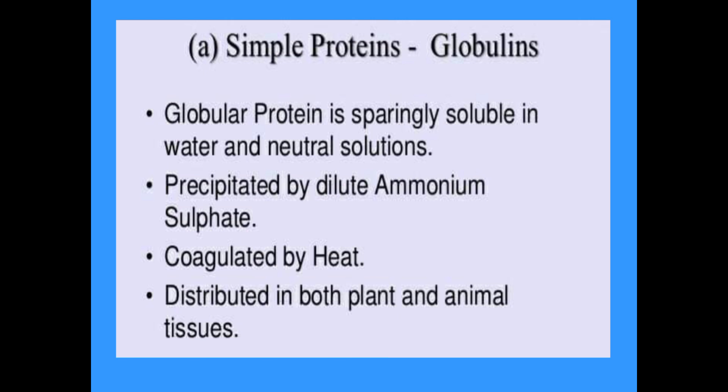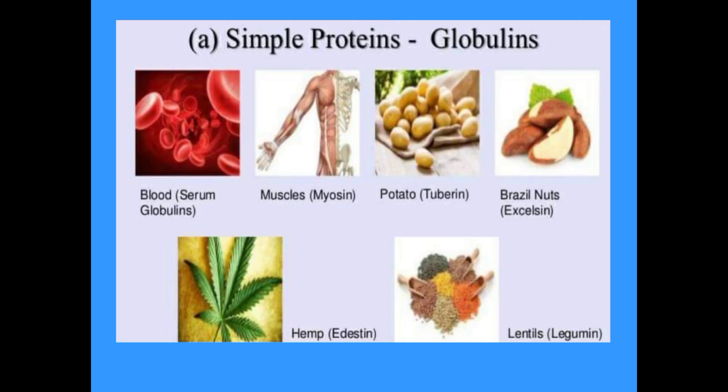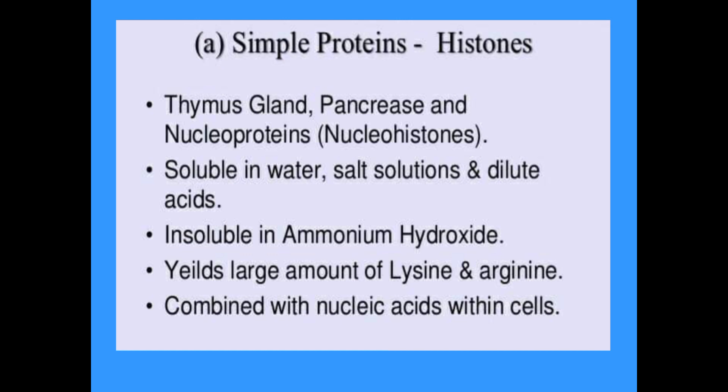Another simple protein type is globulins. Globulin is apparently soluble in neutral salt solutions and is precipitated by dilute ammonium sulfate; when heated it coagulates. Distributed in both plant and animal tissues, examples include blood serum globulins, muscle myosin, potato tuberin, Brazil nut excelsin, hemp edestin, and lentil legumin.